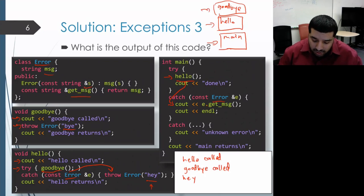And then once that catch block is done, execution proceeds past the try and catches. And that prints out main returns. And the program ends.